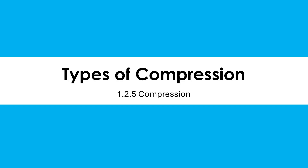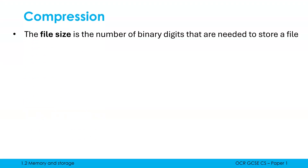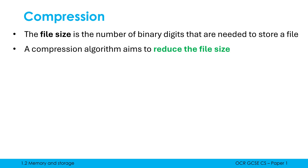The last thing to cover in the memory and storage topic is compression. Compression is all about file sizes and trying to cut down a file size. The file size is the number of binary digits required to store it — whether that's five bits, a million bits, or two billion bits. We often express larger sizes in kilobytes, gigabytes, and terabytes. Compression is trying to reduce this file size.